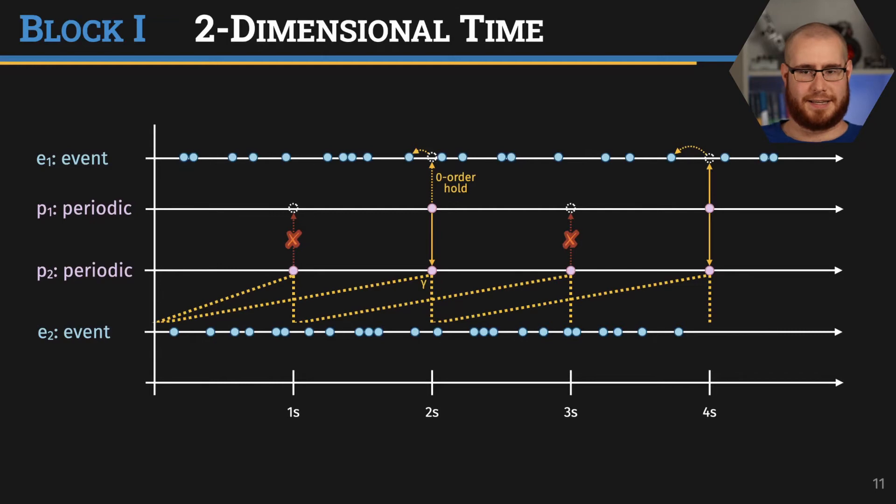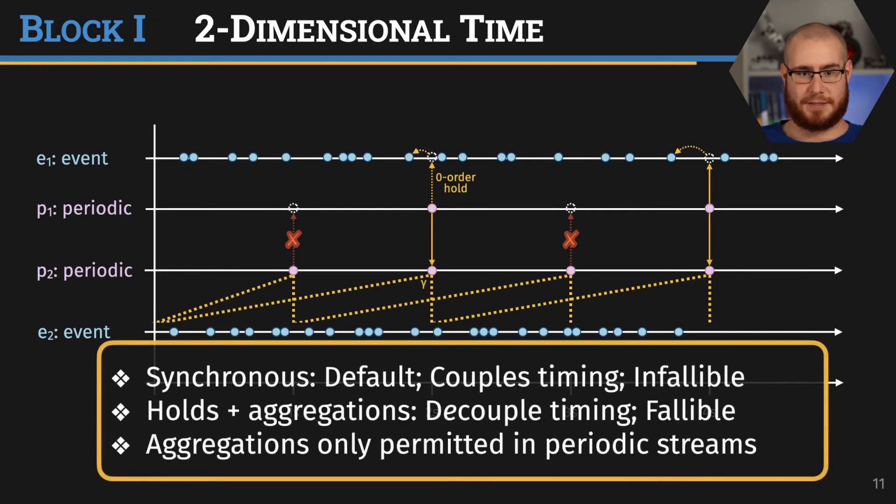The bottom line is that there are synchronous lookups, and these are the default in RTLola. If you just write that P1 accesses P2, it's meant to be a synchronous lookup. Such synchronous lookups couple the timing and are infallible because they enforce that the other stream is definitely also evaluated at the same point in time. As opposed to this, we have asynchronous lookups like hold operations and aggregations. They decouple timing and are fallible because we don't know whether the value we access is actually there. Lastly, aggregations are only permitted in periodic streams as I outlined before.